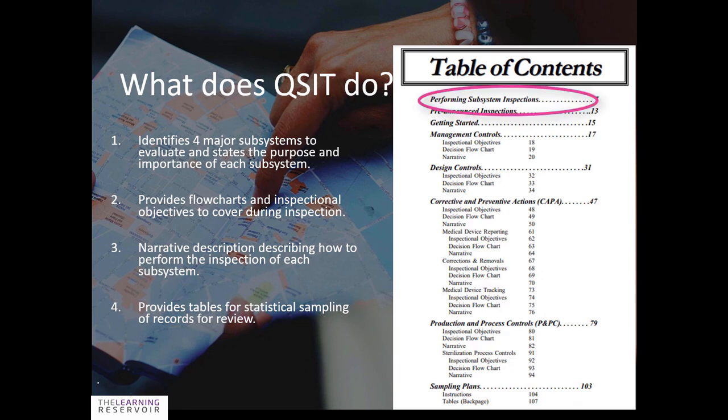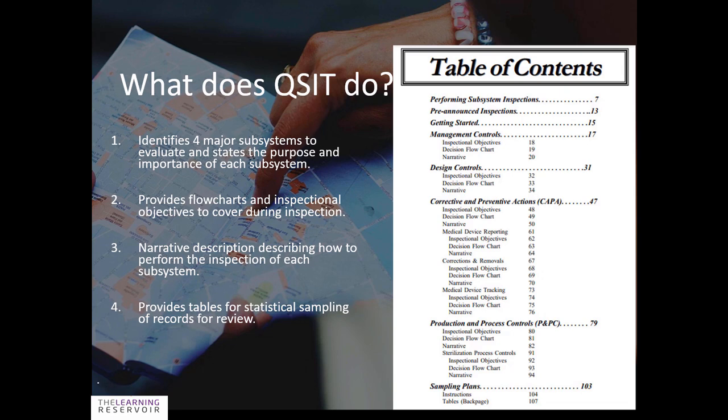It starts off with performing subsystem inspections, a bit of introduction, then it talks about pre-announced inspections, then it gives advice to inspectors on how to get started. Then we have our major subsystems, which are management controls, design controls, corrective and preventative actions, and production and process controls. And at the end it gives some guidance and sampling plans.